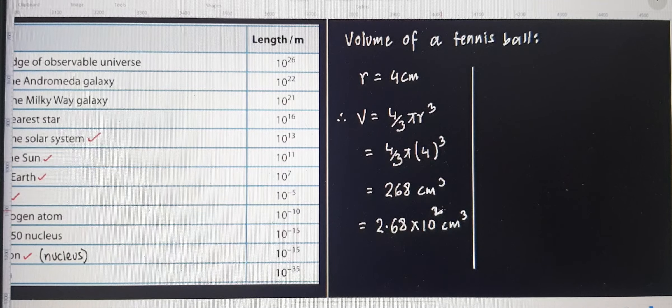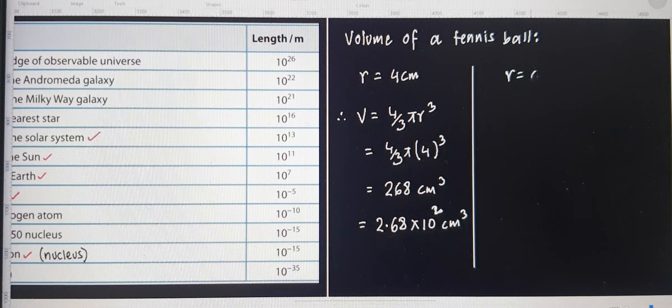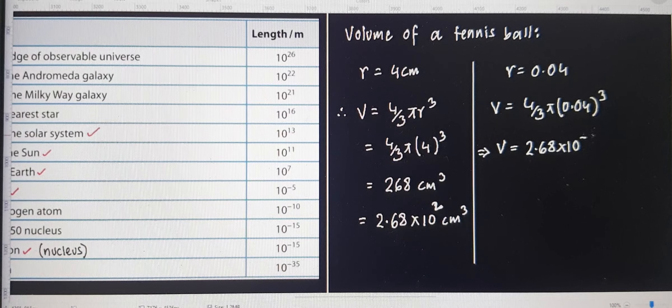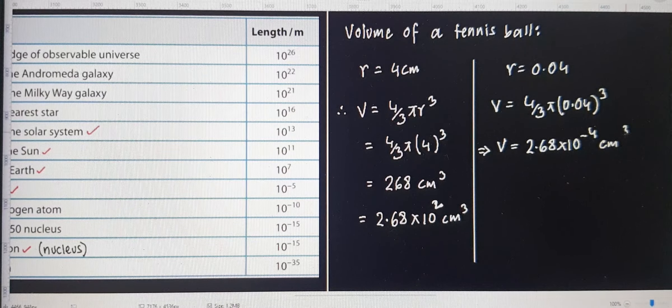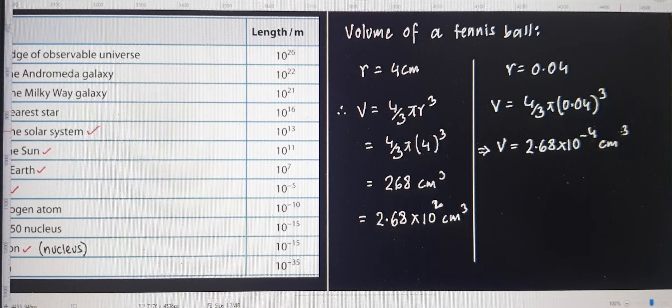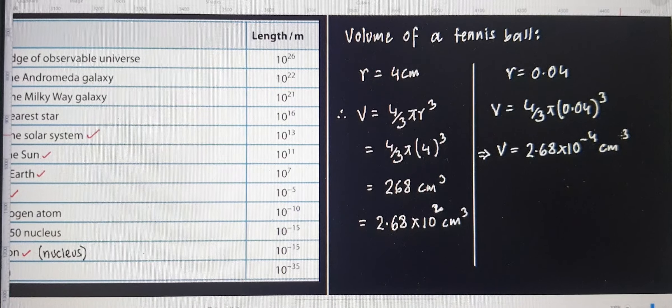Right? But centimeter instead usually we give it in meters. So let's redo this map. But this time, let's do it in terms of meters. So we get 4 by 3 pi into 0.04 cube. And you'll see the vast difference. You should get about 2.68 into 10 to the power negative 4 meter cube. If I'm correct, I don't know. Double check. It's fine. 10 to the power negative 4.